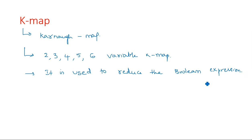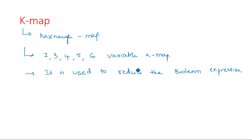In any boolean expression, there may be some redundant terms which we cannot find just by looking at it. After multiplying the individual variables we can identify the redundant terms, and after applying all the laws like associative law, commutative law, distributive law, and De Morgan's law, only then can we get the reduced expression. But using KMAP, there is no need to use all such laws.